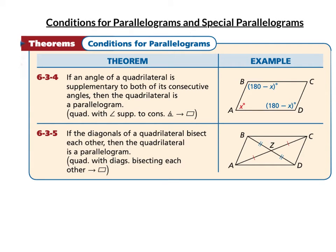The fourth condition: if one angle is supplementary to both of its consecutive angles, then it's a parallelogram. Because if angle A and B add to 180, that makes BC and AD parallel; and if angle A and angle D add to 180, those are same side interior angles making AB and CD parallel — then it's a parallelogram by definition. The fifth condition: if the diagonals bisect each other, then it's a parallelogram.